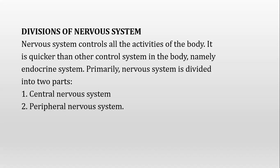The nervous system controls the body through chemical messengers known as neurotransmitters, while the endocrine system controls body activities through hormones. Both systems are responsible for controlling body activities, but their chemical messengers differ. The nervous system acts via neurotransmitters and the endocrine system acts via hormones. The nervous system is primarily divided into two parts: central and peripheral.